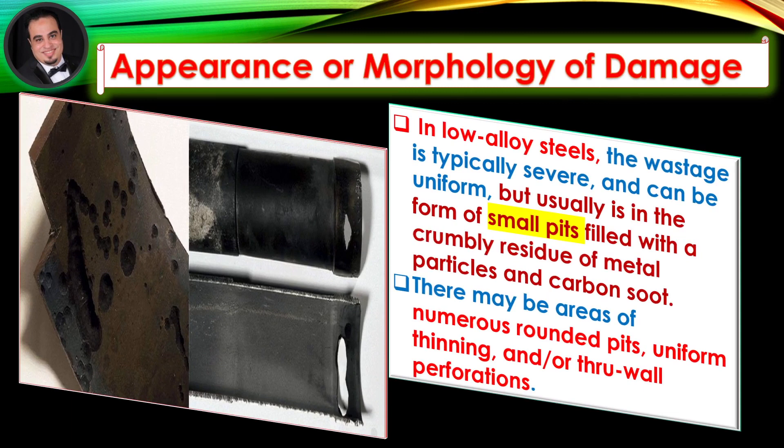As illustrated in figures, in low alloy steels the wastage is typically severe and can be uniform, but usually is in the form of small pits filled with a crumbly residue of metal particles and carbon soot. There may be areas of numerous rounded pits, uniform thinning, and/or through-wall perforations.